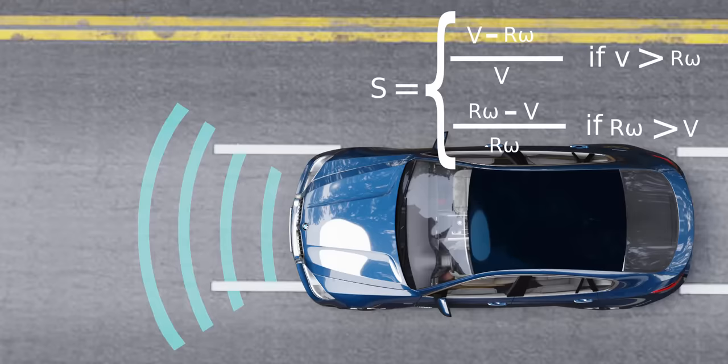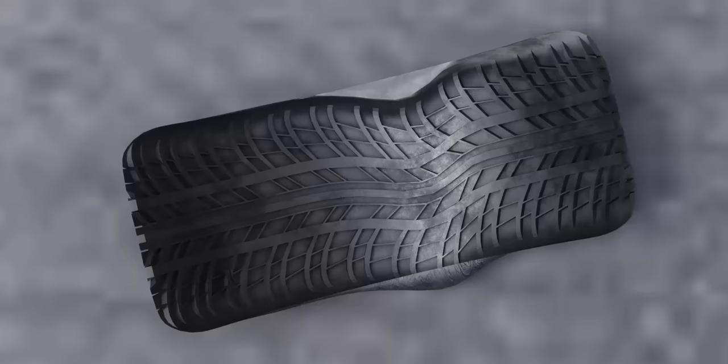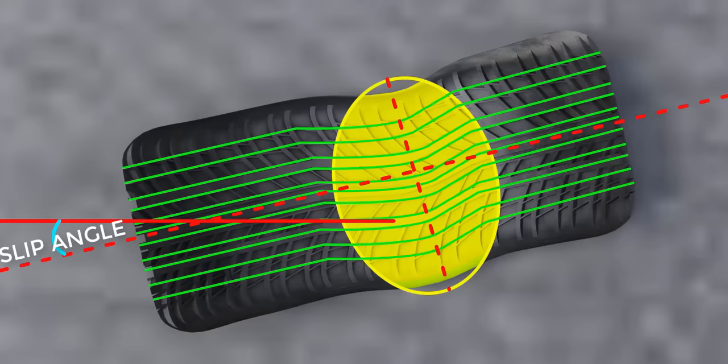In this video, we studied frictional force variation for straight-line driving. When the vehicle takes a turn, the contact patch deforms. The angle between the direction in which the wheel is pointing and the direction in which the wheel is traveling is known as slip angle. In the upcoming videos of this series, we will see how the slip angle affects friction.